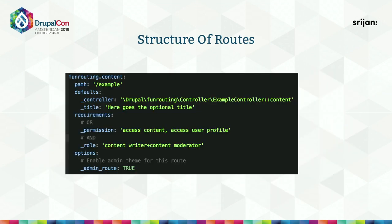Expanding on the structure of routes — in the requirements section there is a permissions section and a roles section. Permissions separated by a comma define an OR operation, while roles separated by a plus define an AND operation. So if a user accessing slash example has roles 'content writer' AND 'content moderator', and has the permission 'access content' OR 'access user profile', the route returns true, the example controller is called, and the content method is invoked.